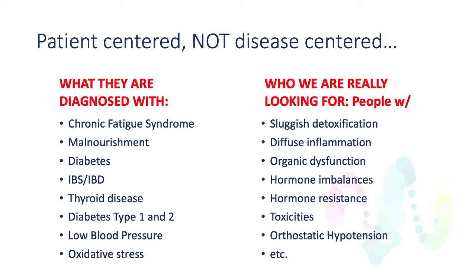With functional medicine, everything we're looking at is about perspective. What happens is we get patients that walk in our door with a diagnosis — and most of the time, the diagnosis gets rubber-stamped on their forehead with medications underneath it. Whether they're diagnosed with chronic fatigue, malnourishment, diabetes, thyroid disease, or oxidative stress, what do we look for? We're not interested in the diagnosis. I want to know why.